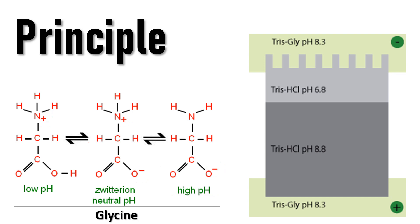When the power is turned on, the glycine molecules at pH 8.3, which are negatively charged, start moving towards the positive electrode and are forced to enter into the stacking gel. Once they enter the stacking gel, the pH changes to 6.8. At pH 6.8, which is around neutral pH, glycine switches to the zwitterion form and acquires a neutral charge. Since it is now neutral, it moves very slowly in the electric field.